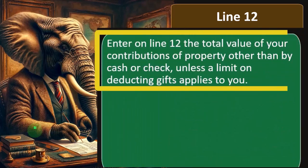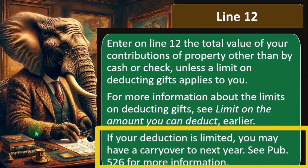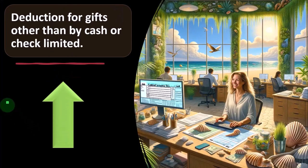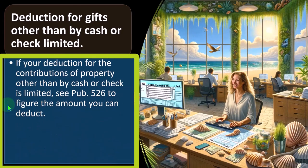Enter on line 12 the total value of your contribution of property other than by cash or check, unless a limit on deducting gifts applies to you. For more information about the limits on deducting gifts, you can see those same limits we looked at earlier. If your deduction is limited, you may have a carryover to next year, a similar kind of process we discussed. If your deduction for the contribution of property other than by cash or check is limited, you can see Publication 526 to figure the amount that you can deduct.